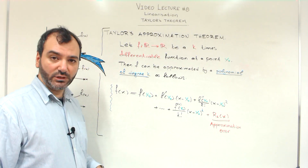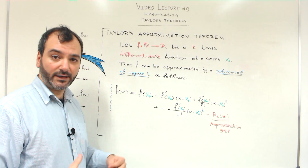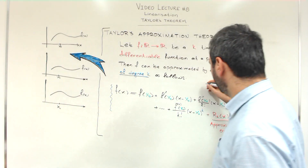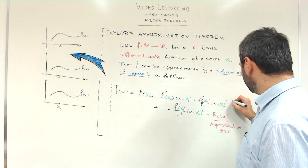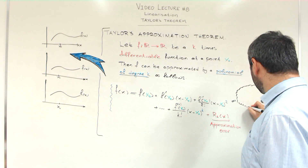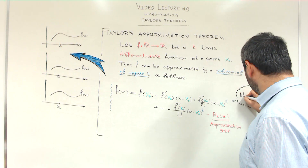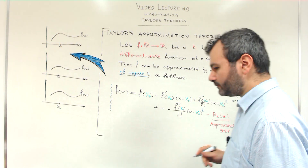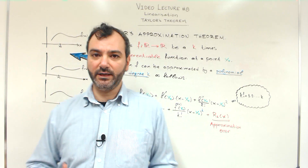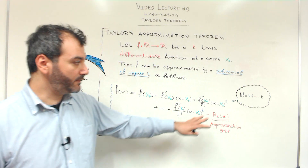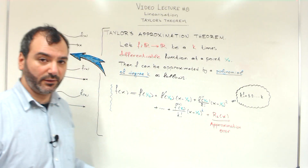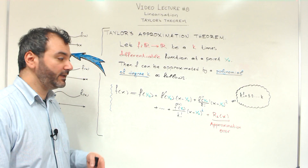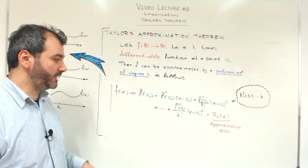In case you don't remember, the factorial of an integer number k — k factorial — is the product 1 times 2 times 3 times ... times k. For example, 3 factorial is 1 times 2 times 3, which is equal to 6.